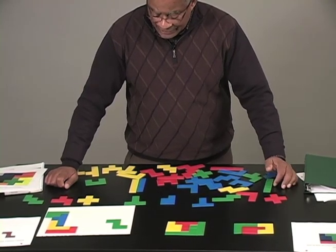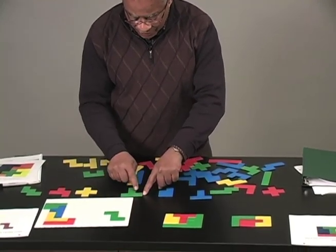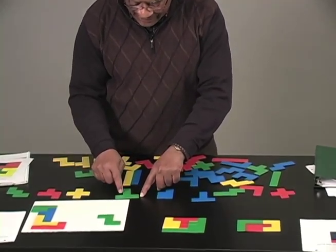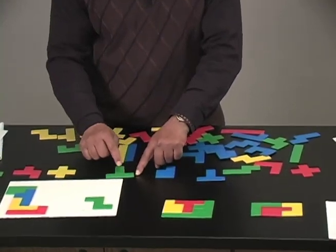Well, let's see. This one, the perimeter is one, two, three, four, five, six, seven, eight, nine, ten, eleven, twelve.